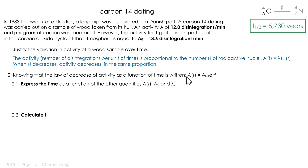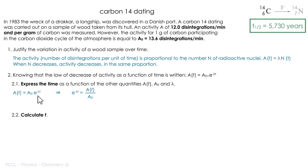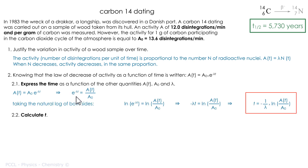Knowing that the law of activity decay is given to you in the problem statement, express the time as a function of the other quantities — this is carbon dating. I pass to the left the part containing what I am looking for, namely the time, and take the logarithm to get rid of the exponential. Taking the logarithm of both sides: minus λt equals ln(A(t)/A₀).